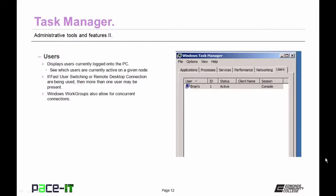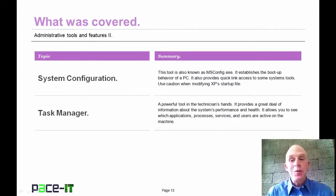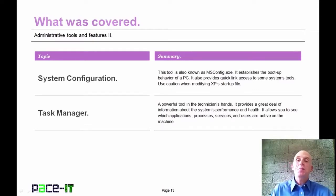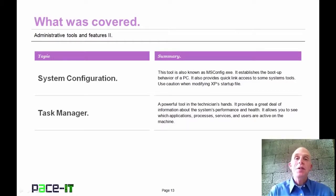The Users tab displays all users currently logged into a PC — usually just one, but Windows Workgroup allows up to 10 concurrent connections, and you may see more if using fast user switching or Remote Desktop. That concludes this session on Administrative Tools and Features, Part 2. We talked about System Configuration and Task Manager. On behalf of Pace IT, thank you for watching, and I'm sure we'll do some more.